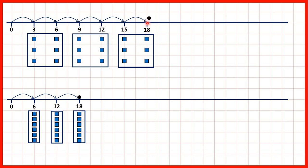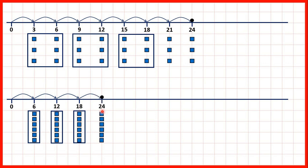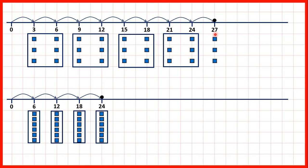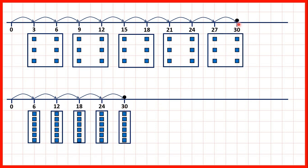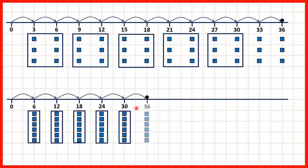Then the next multiples of 3 are 21 and 24, and 24 is also the next multiple of 6. We have 6 counters here and 6 more counters in our 6 times table. If we keep counting we get 27 and then 30, and 30 is the next multiple of 6 as well. We can continue: 33 and then 36.